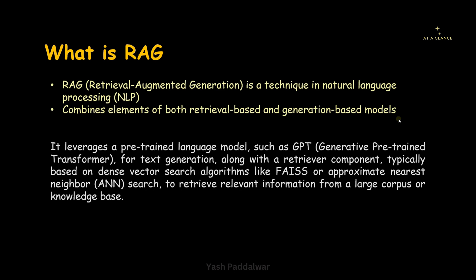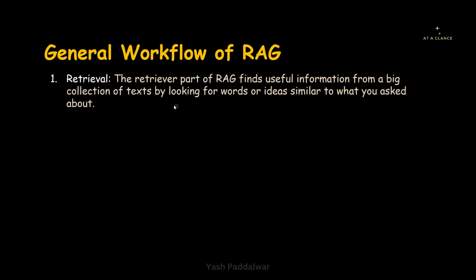I hope an overview of RAG is clear. Now we'll move on to the general workflow of RAG. In this general workflow, we'll be looking into every single component of RAG — that is retriever, augmentation, and generation. Let's start with retrieval. The retriever part of RAG finds useful information from a big collection of text, or knowledge base, by looking for words or ideas similar to what the user asked about. Suppose a user raises a query — the relevant information related to that query is present somewhere inside a huge knowledge base, and for fetching that, we require the retriever.